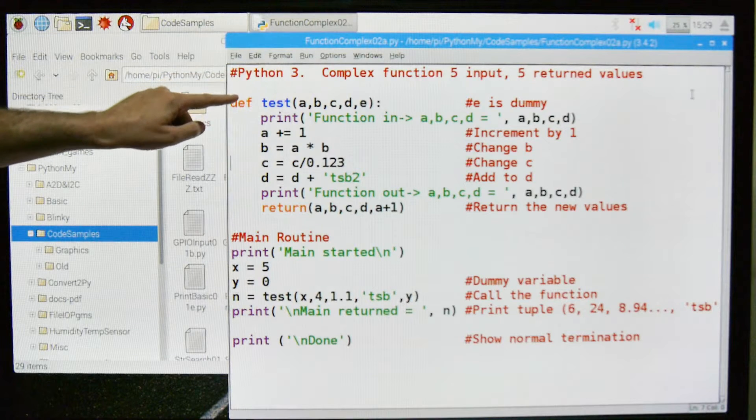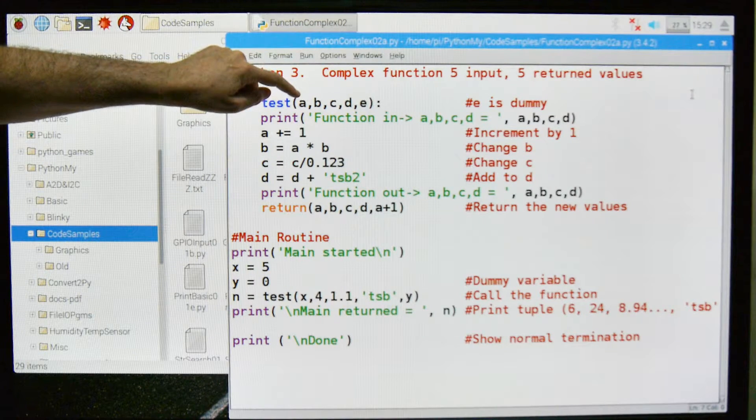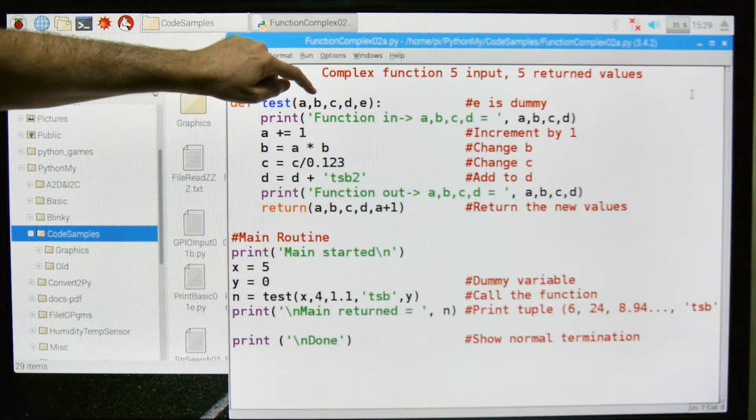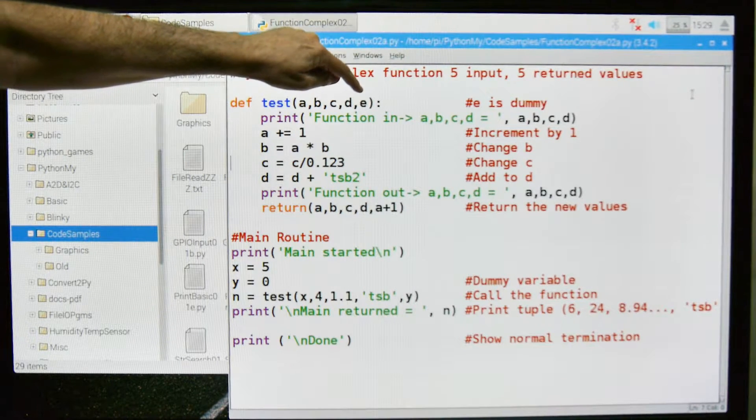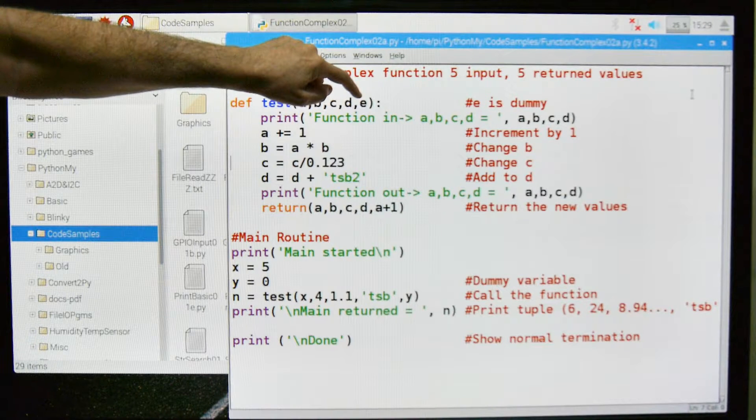Okay, so let's call that function. We'll go up here and we'll say, okay, so the a is x, the b is 4, the c is 1.1, the d is TSB, and the e is going to be the y, which is 0.